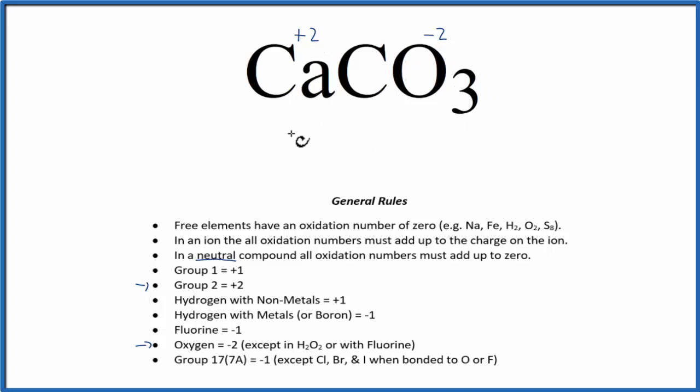So we can write a brief equation to solve this. We have 2 for the calcium, plus, we don't know what the carbon is, and then each oxygen has an oxidation number of minus 2, but we have 3 of them, and the whole thing we said was a neutral compound, so it'll add up to 0.